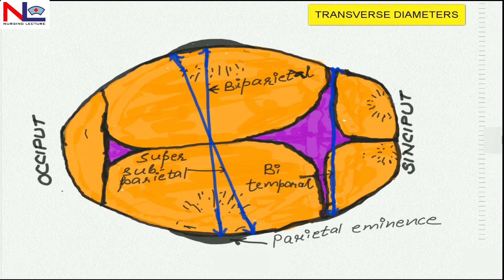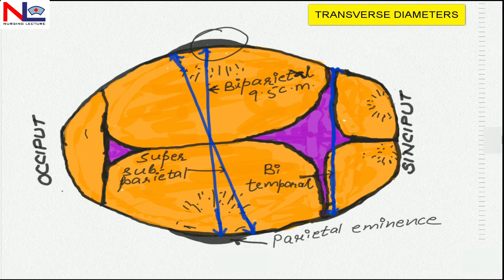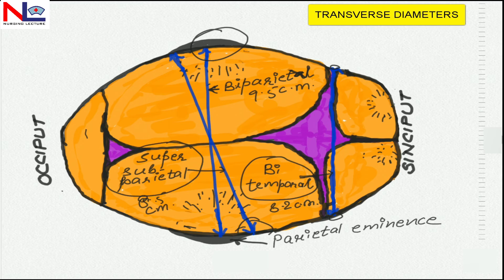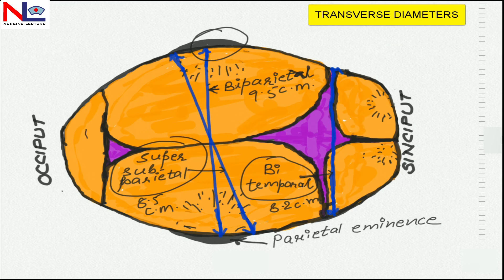Looking at the transverse diameters from a superior view: the biparietal diameter lies between the two parietal eminences and is about 9.5 centimeters long. The bitemporal diameter is about 8.2 centimeters long and extends to the farthest points of the coronal suture at the temples. The supersubparietal diameter measures about 8.5 centimeters and extends from below one parietal eminence to above the other parietal eminence.